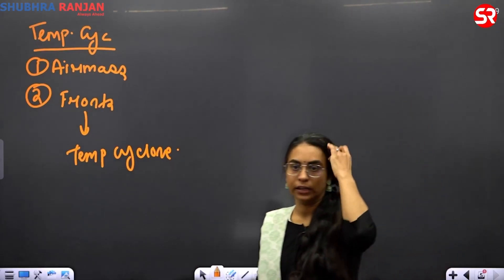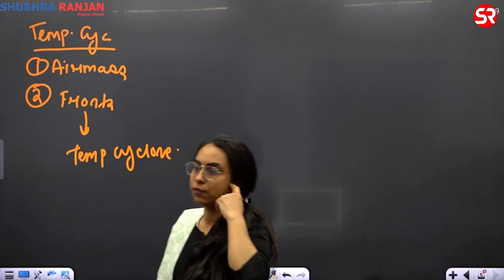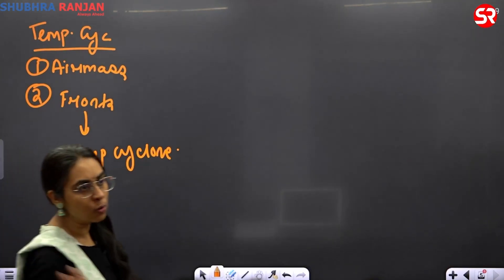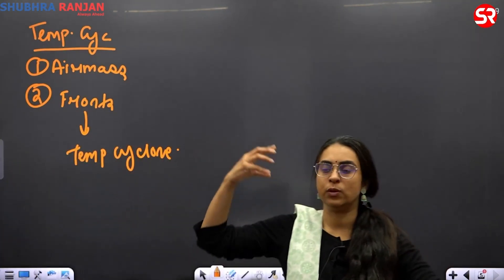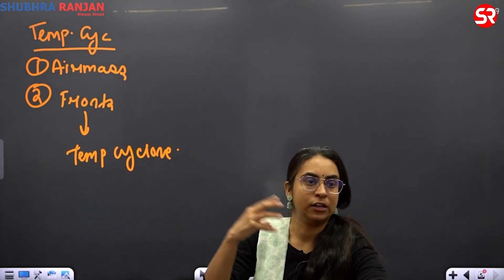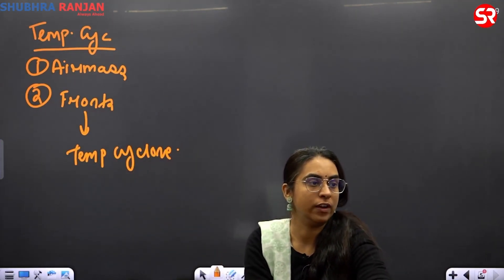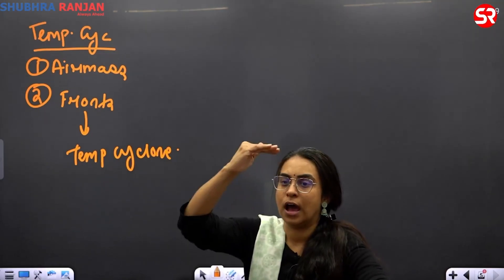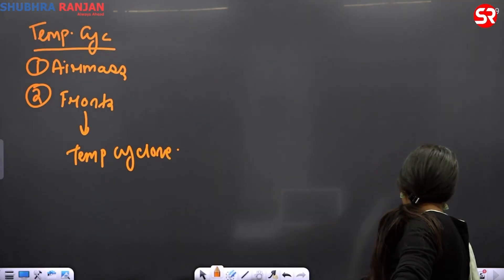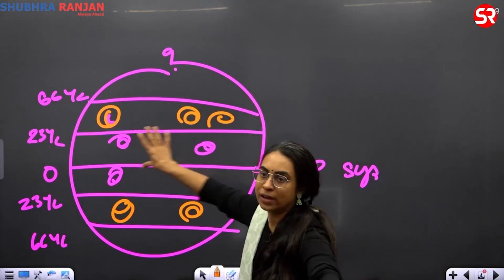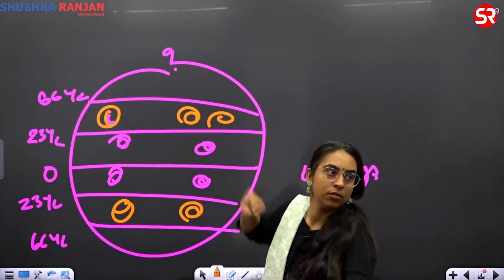For mid-latitude weather, if you look at the weather reports of the mid-latitude, they always talk about it getting cold because it will be invaded by the cold air mass, or getting warm because it will be invaded by the warm air mass. Mid-latitude is in the middle — above it you have cold polar air, and below it you have the warm tropical air.